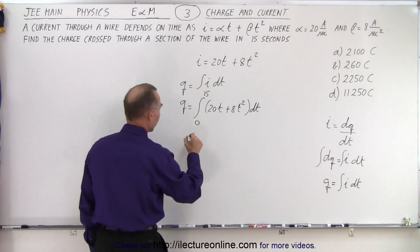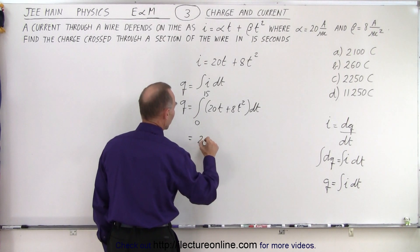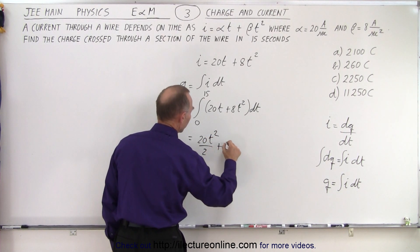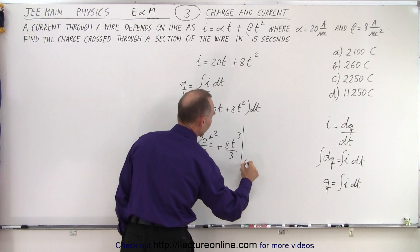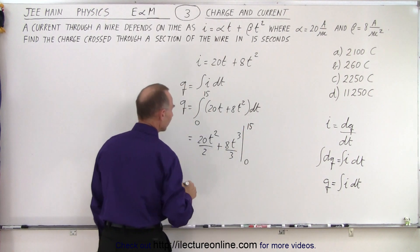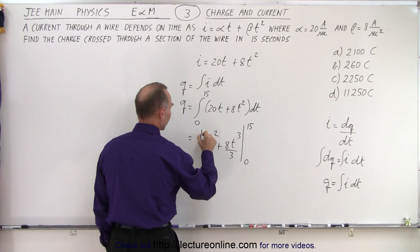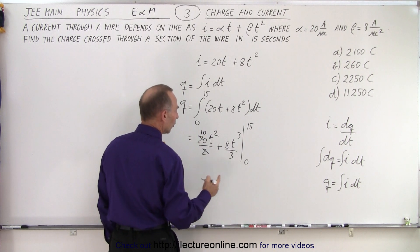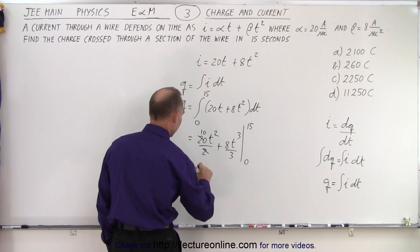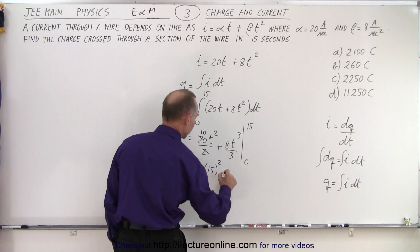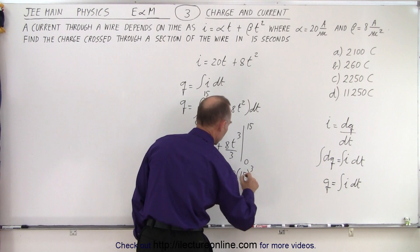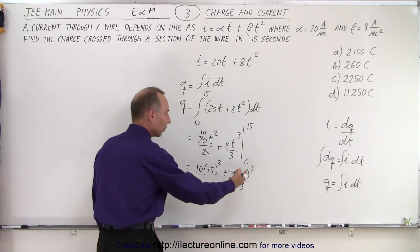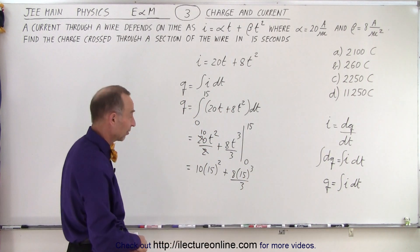Let's go ahead and do the integral. This is equal to 20t squared over 2 plus 8t cubed over 3, evaluated from 0 to 15 seconds. Of course this cancels out and that becomes 10t squared. So plug in the upper limit: we get 10 times 15 squared plus 8 times 15 cubed over 3, and we don't have to plug in the lower limit because that gives us 0.